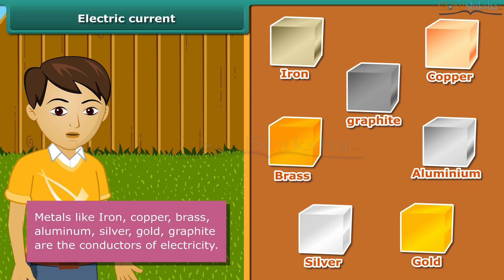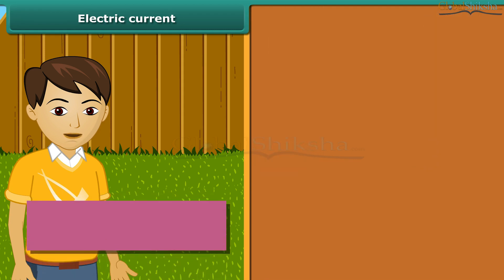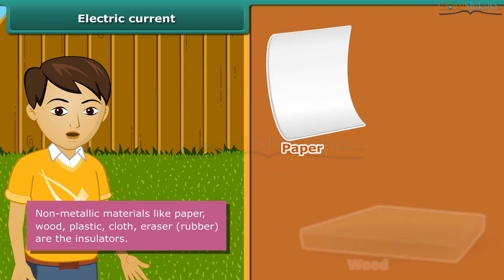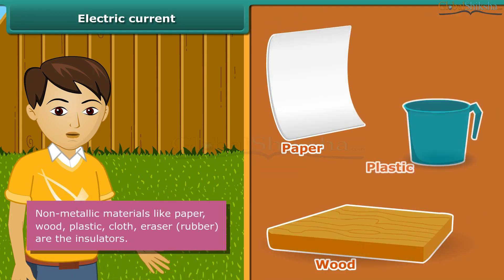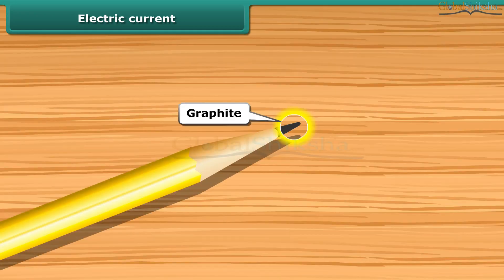The materials through which electric current does not flow are called insulators. Insulators are also known as non-conductors of electricity. Paper, wood, plastic, cloth, eraser, and rubber are insulators. Pencil lead is made of graphite.